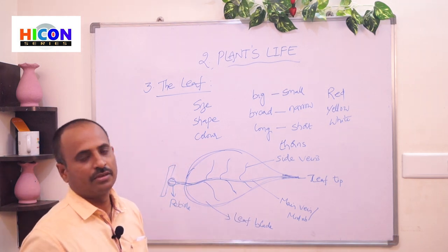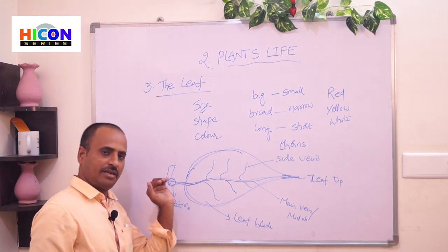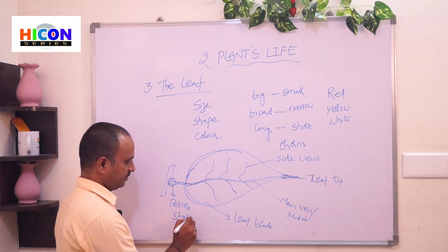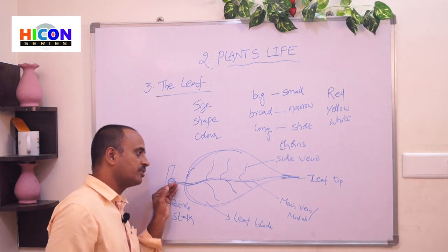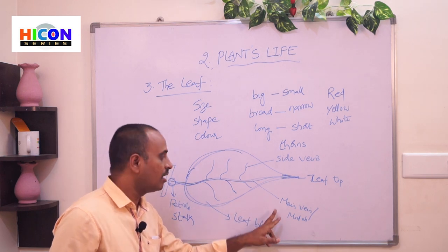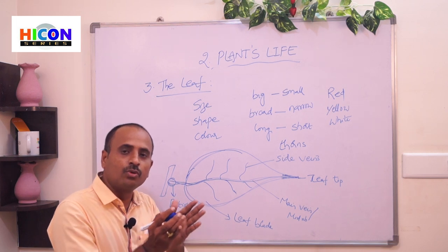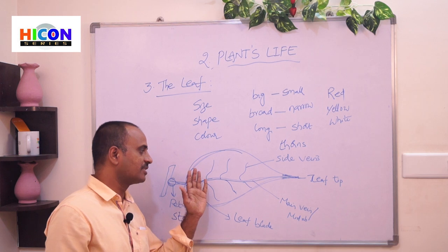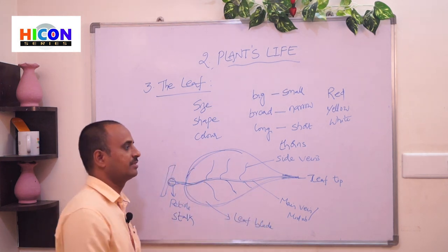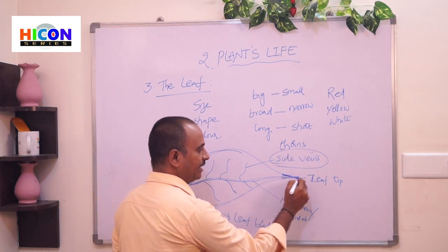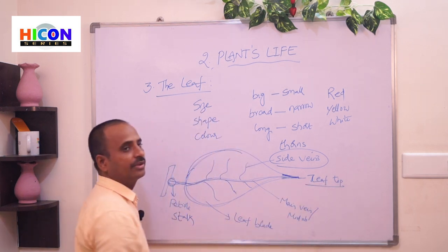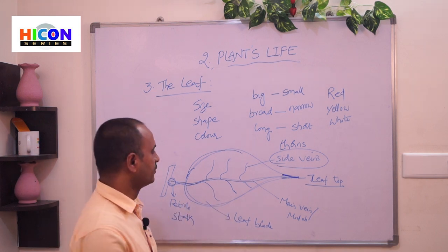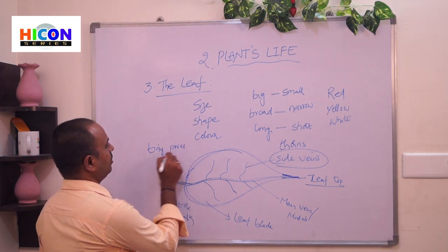These are the important parts of the leaf — petiole or stalk, main vein or midrib, side veins, leaf tip, and leaf blade or leaf lamina. The midrib divides the leaf into two equal parts, and small veins grow from it on either side. Leaves also contain tiny pores called stomata.